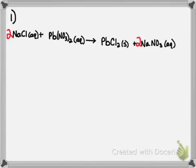So we need to put a 2 in front of NaNO₃ on the product side to balance our Na's. Now let's go back and verify: we have 2 Na's on each side, 2 Cls on each side, 1 lead on each side, and 2 NO₃'s on the reactant side. Because we put the coefficient of 2 in front of NaNO₃, we also have 2 NO₃'s on the product side. So our equation is now completely balanced.